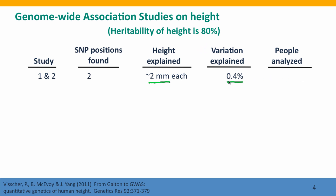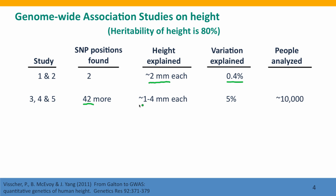In later studies, three more studies found 42 additional positions, and again, each of these positions in the genome had only a very small effect on height. Altogether, even though they had analyzed 10,000 people — which should have been quite a powerful study — they were only able to explain 5% of the difference in height.